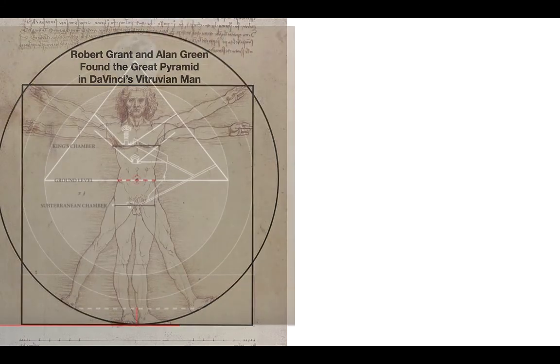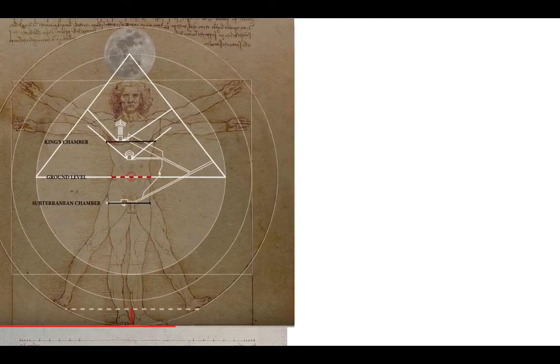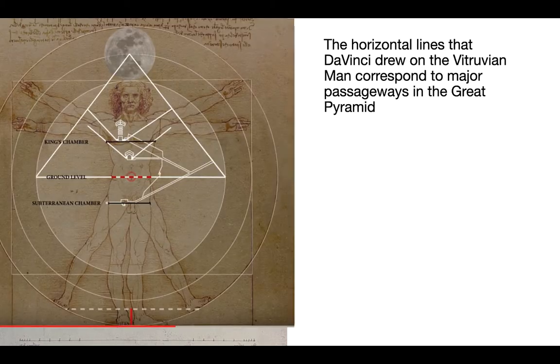That is a superimposition of the Great Pyramid over the Vitruvian Man, the way they found it. You can see there. So the horizontal lines that da Vinci drew on The Vitruvian Man seem to be pointless. Why did he draw those there?